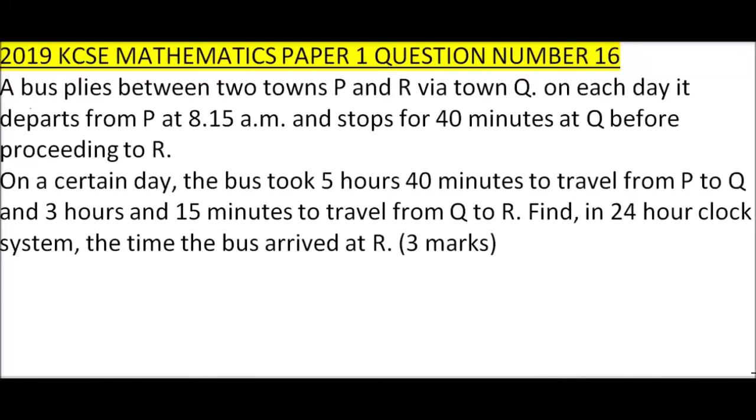Number 16, 2019 paper 1. We are told a bus plies between two towns P and R via town Q. On each day it departs from P at 8:15 a.m. and stops for 40 minutes at Q before proceeding to R.